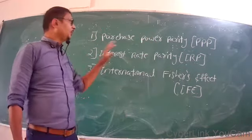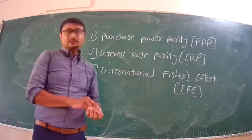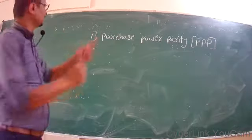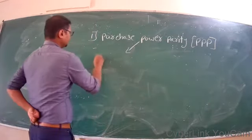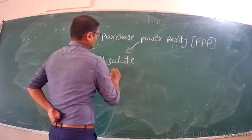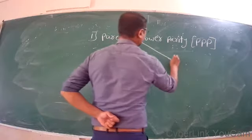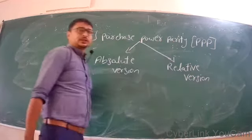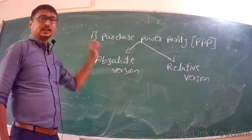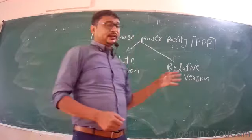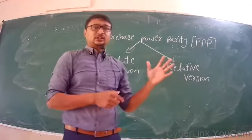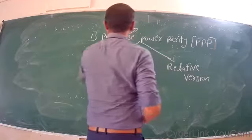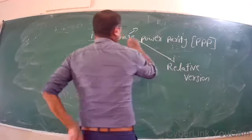All three theories contain problems, and from that point of view both Purchase Power Parity theory and Interest Rate Parity theory are very important. In PPP theory, there are two versions: one is the absolute version of the theory, and another is called the relative version. The absolute version never considers inflation, while when inflation is included it becomes the relative version. The PPP theory was pioneered by Mr. Gustav Cassel.